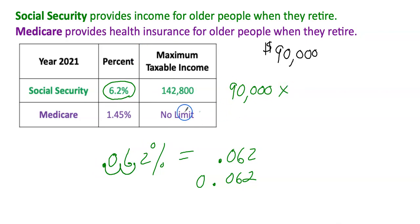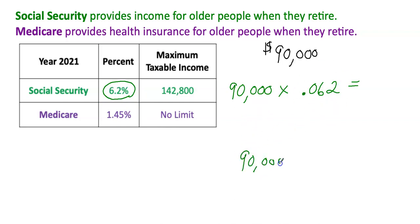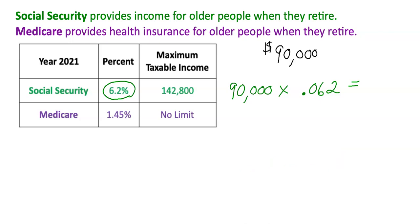I'm going to multiply 90,000 times 0.062. If you have a percent symbol on your calculator you can just enter 90,000 times 6.2 percent directly, but it's important to know how to convert percent to a decimal. Punching this into the calculator: 90,000 times 0.062 equals $5,580.